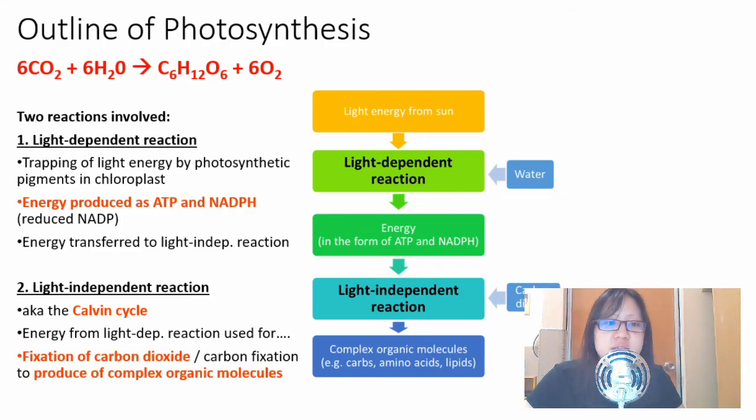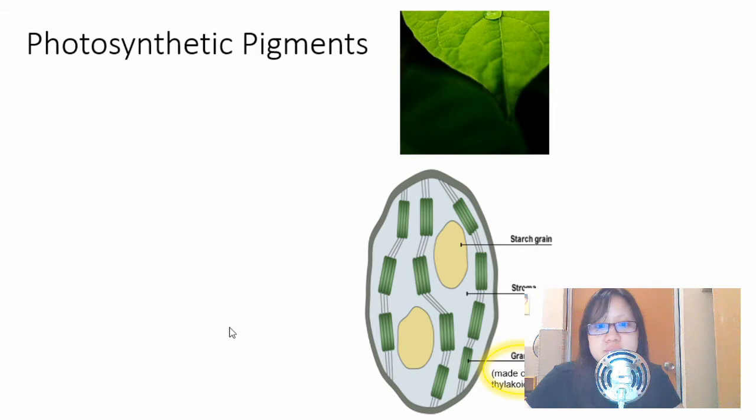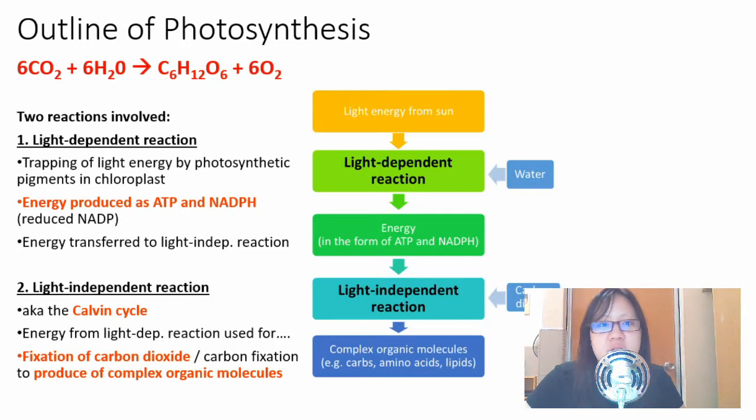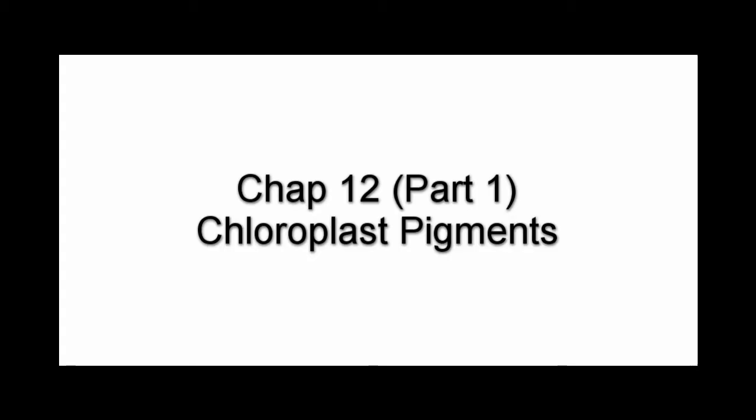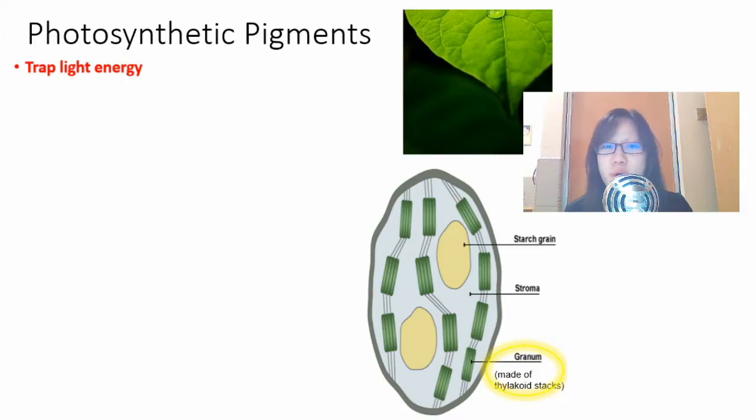The energy produced as ATP and NADPH here is used for the fixation of carbon dioxide to produce complex organic compounds in the light independent reaction. So take the energy here, produce glucose using carbon dioxide essentially. To start off the entire process we need to first talk about photosynthetic pigments found in the leaf, in the chloroplast, and involved very heavily in the light-dependent reaction.